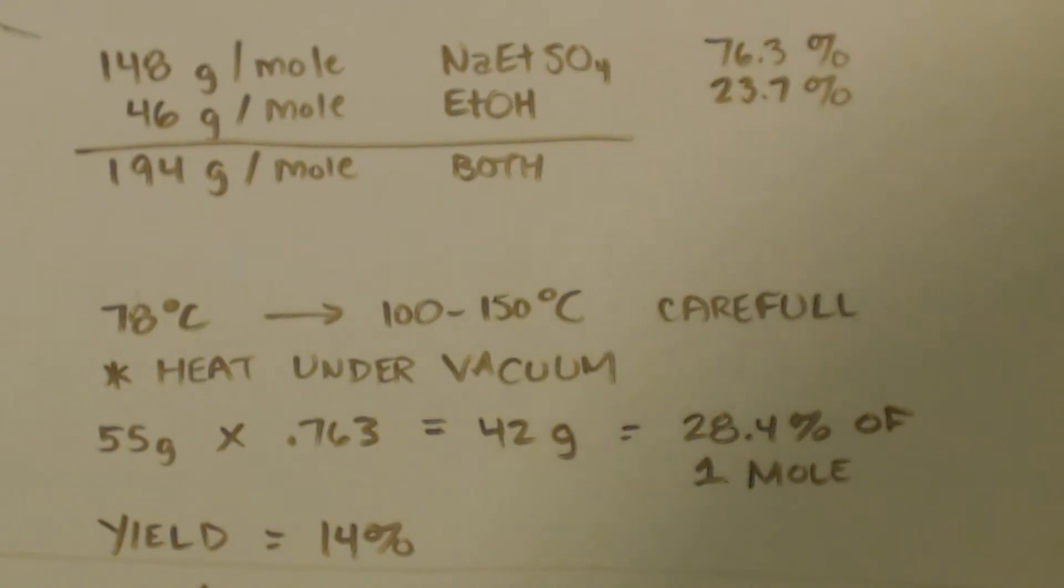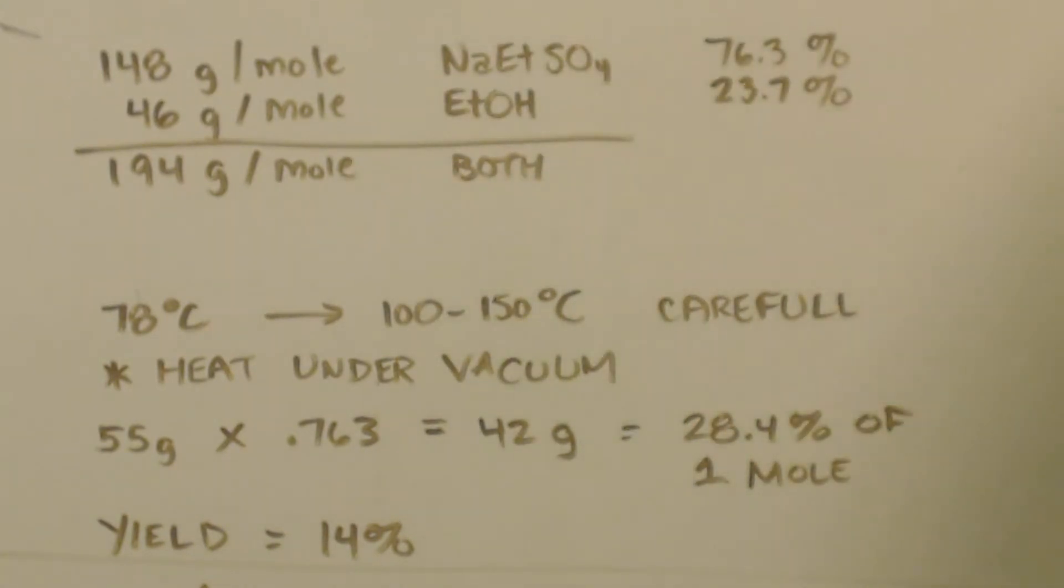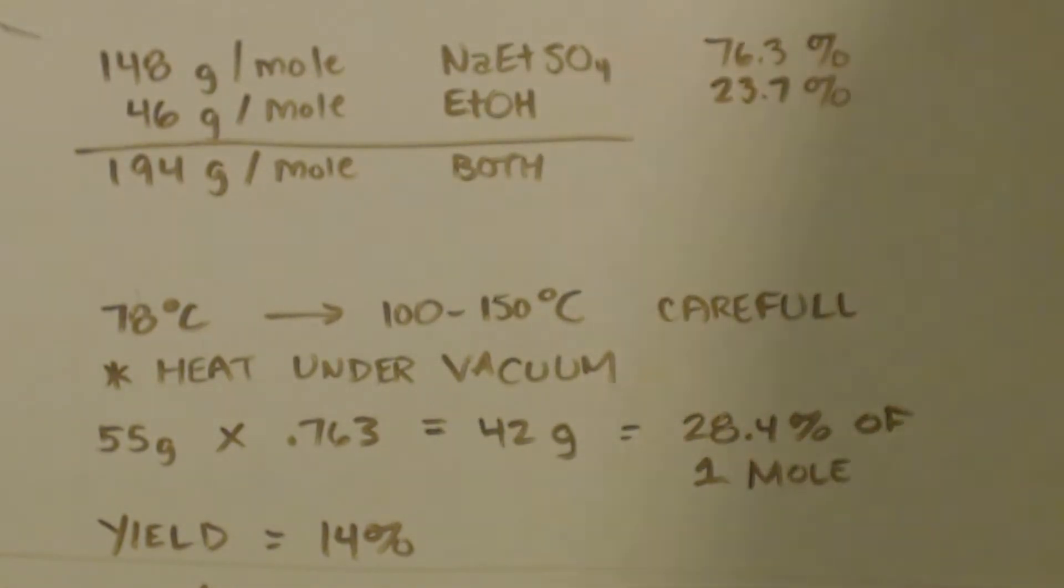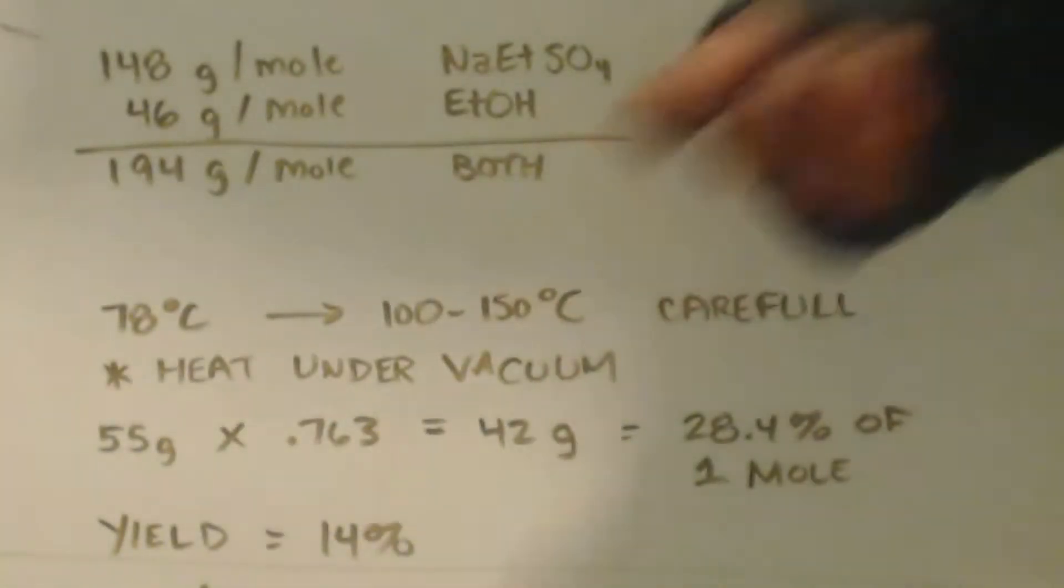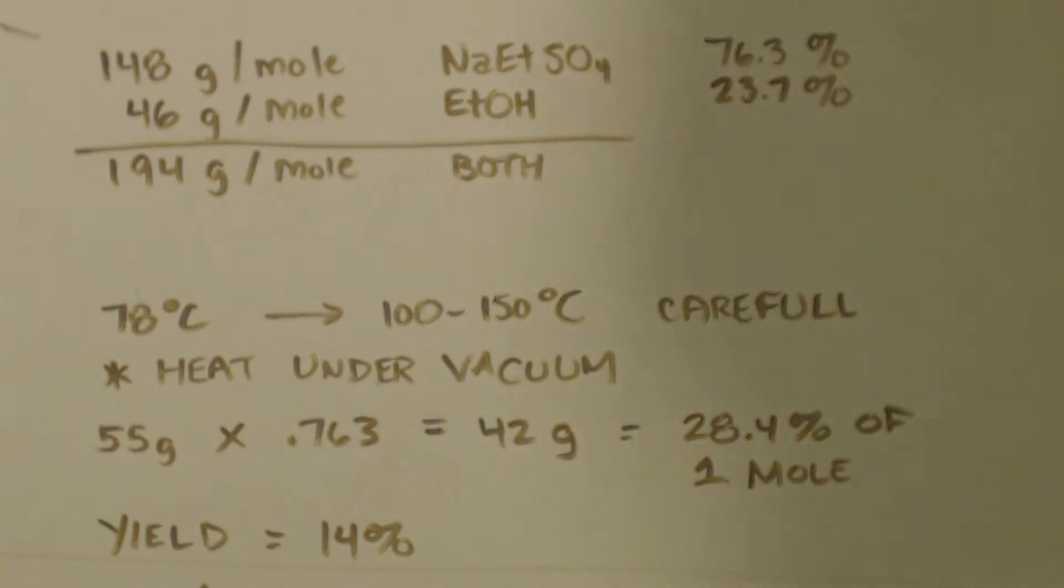There's two ways that you can get rid of this though. The reason why I'm leaving it on here is because I want to see if it affects the yield. The next time I do this, I will, because I'm going to make some nitroethane with this. So the next time I make sodium ethyl sulfate, I will do what I'm about to tell you. That way I will get rid of the ethanol off of there and I will make some nitroethane a second time and see what the difference is between the yields. That's how you learn.